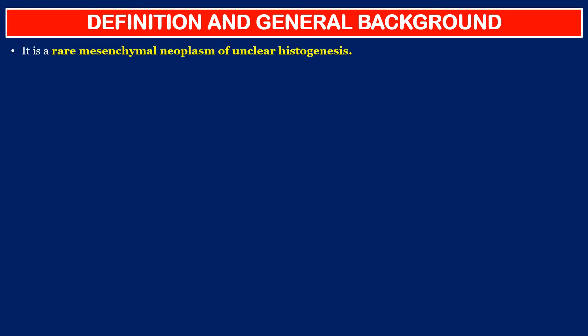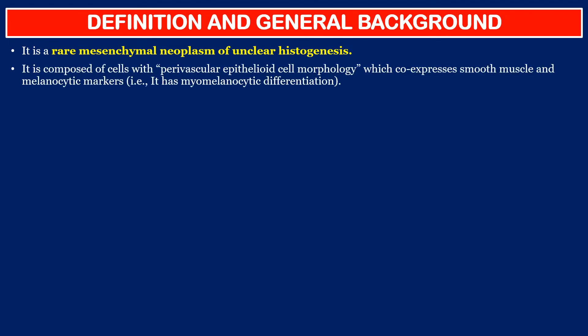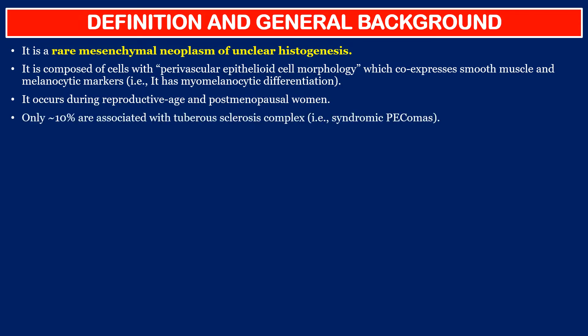Definition and general background. It is a rare mesenchymal neoplasm of unclear histogenesis. It is composed of cells with perivascular epithelioid cell morphology, which co-expresses smooth muscle and melanocytic markers — that is, it has myomelanocytic differentiation. It occurs during reproductive age and in postmenopausal women. Only approximately 10% are associated with tuberous sclerosis complex.